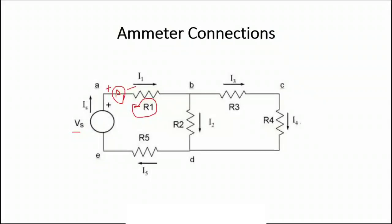By connecting the ammeter in this way, you will be able to calculate I1 flowing through R1. For the second current I2, once again break the connection and introduce the ammeter in series with R2. At node B we have R1, R3, and the positive of the ammeter, with the negative of the ammeter connected with R2.